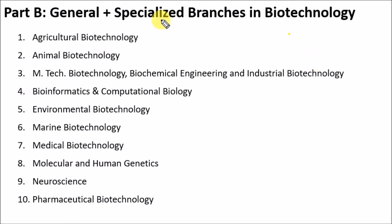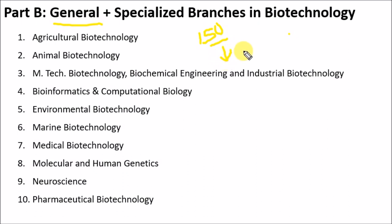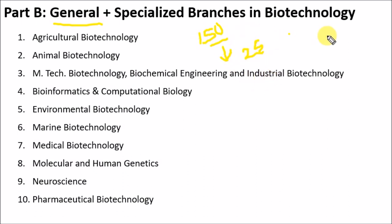Now for Part B — general plus specialized branches of biotechnology — out of 150 questions you only need to attempt 50. Of those 150 questions, 25 to 30 come from the general biotechnology section covering cell biology, RDT, methods in biology, genetics, genomics, and proteomics. So you only need to prepare about 25 questions from the specialized branches.